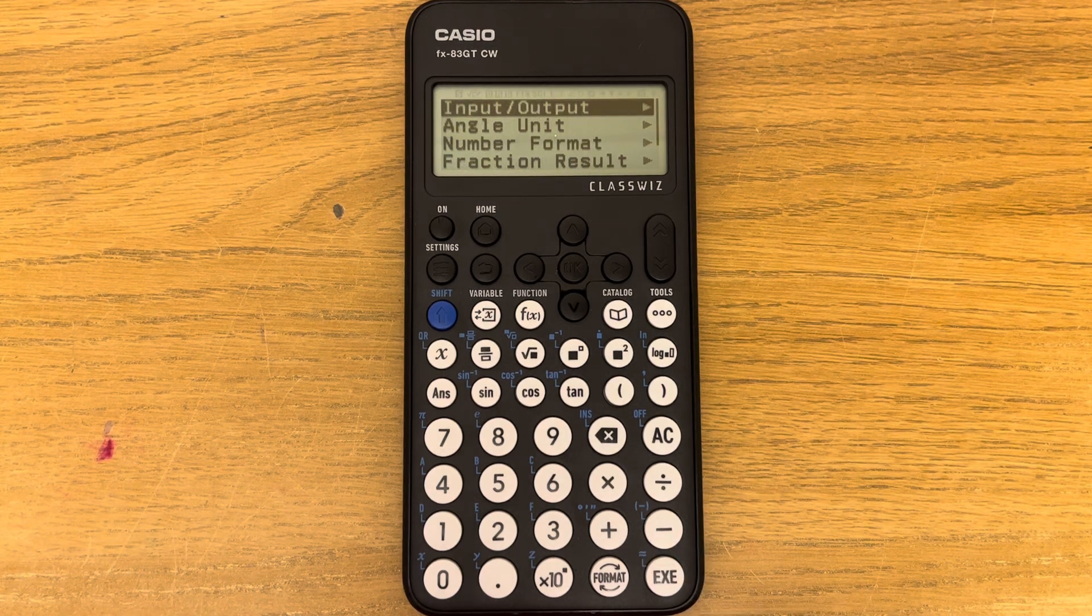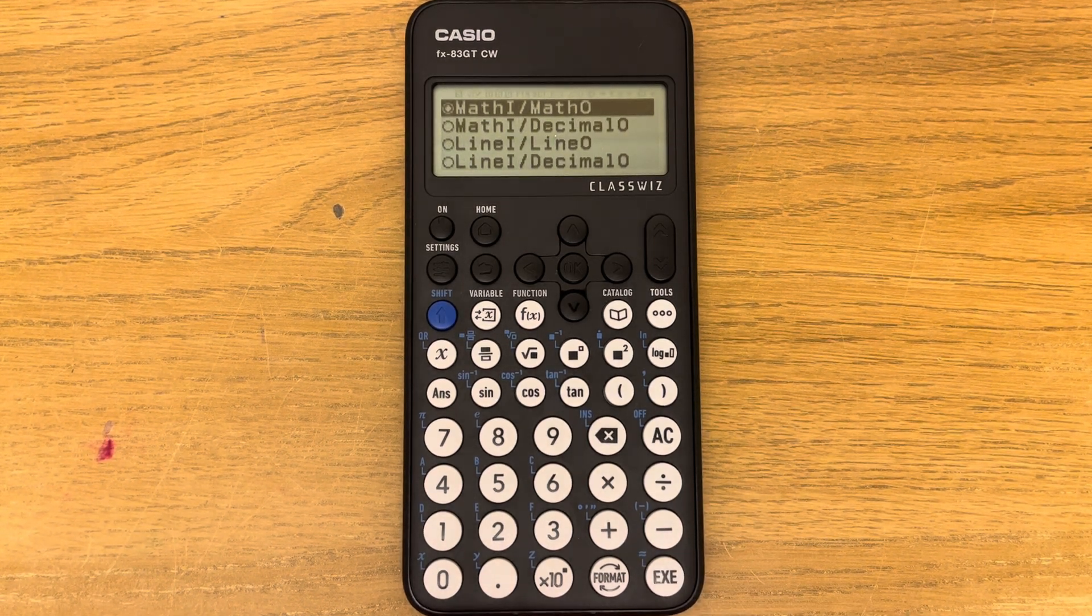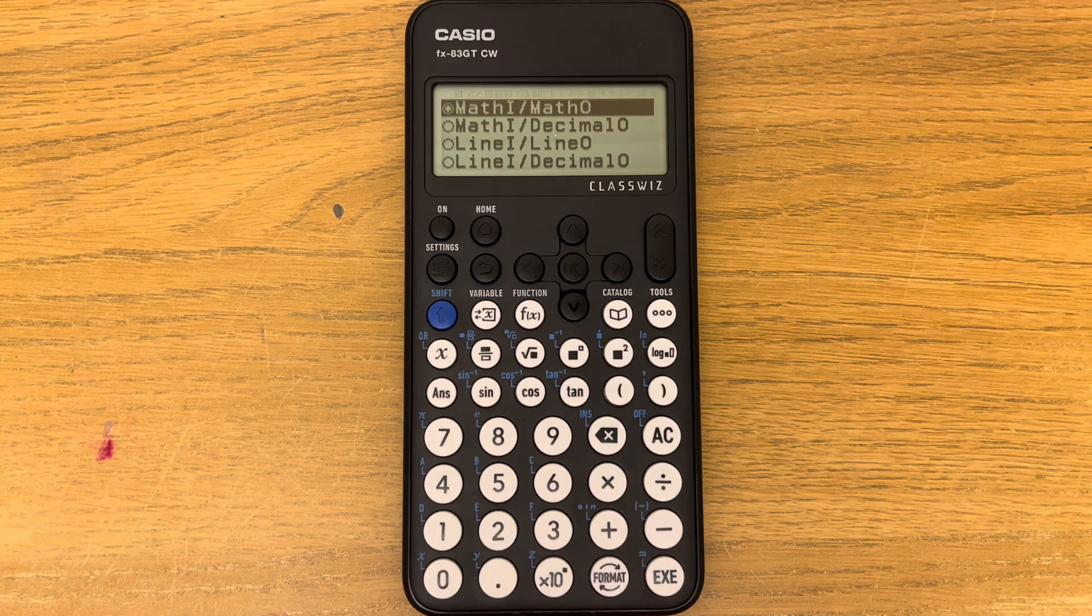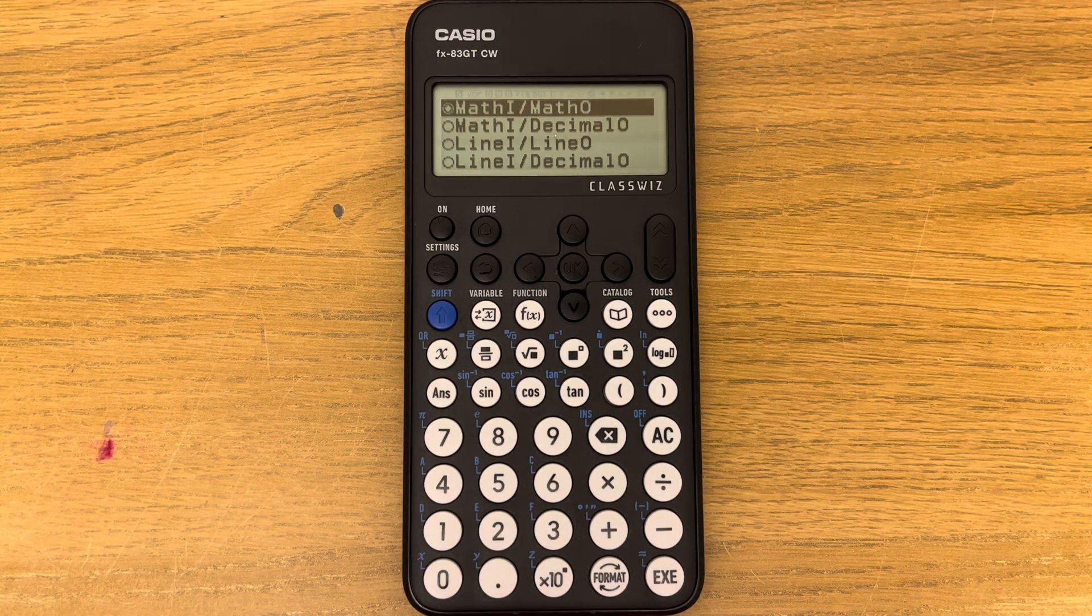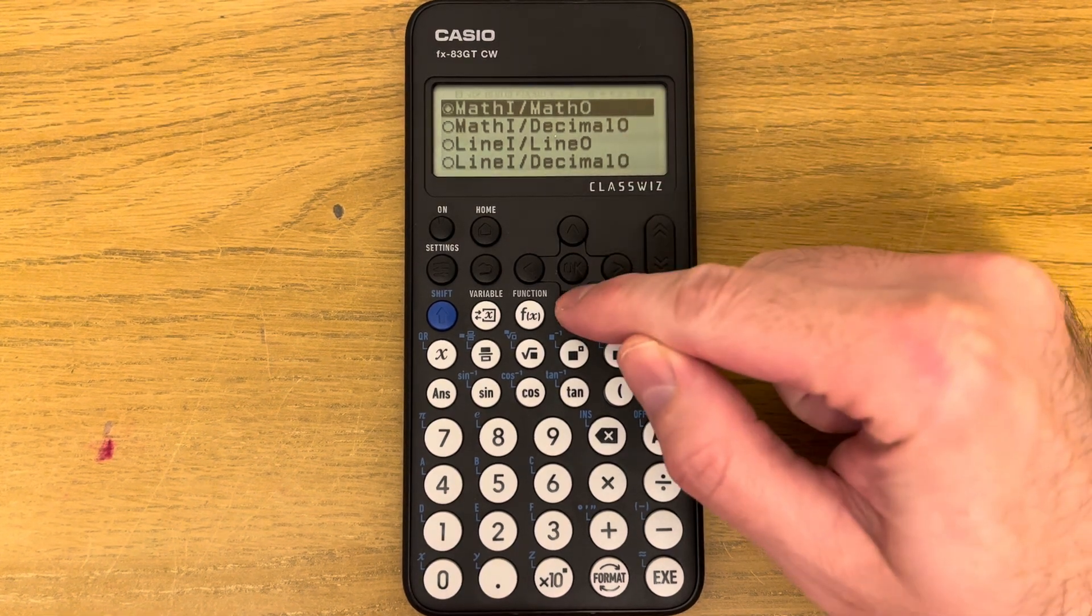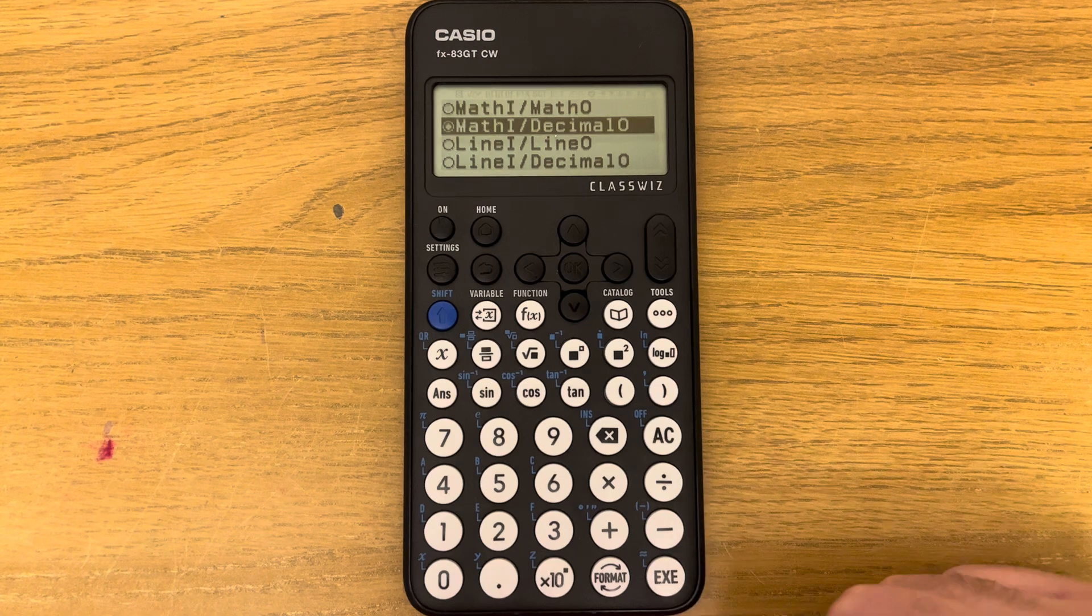And then press execute again. Okay, so the top one is set to give you the answer as a fraction first, and it's the second one that you need. So if you scroll down and press execute.